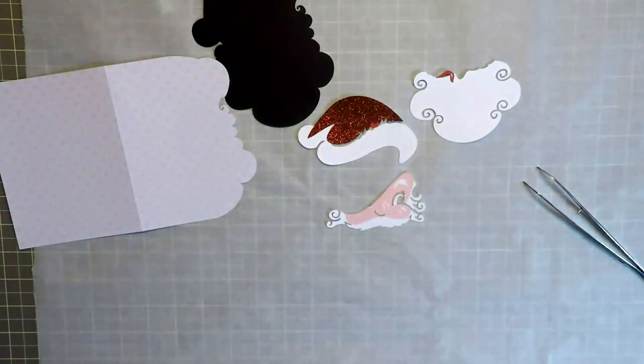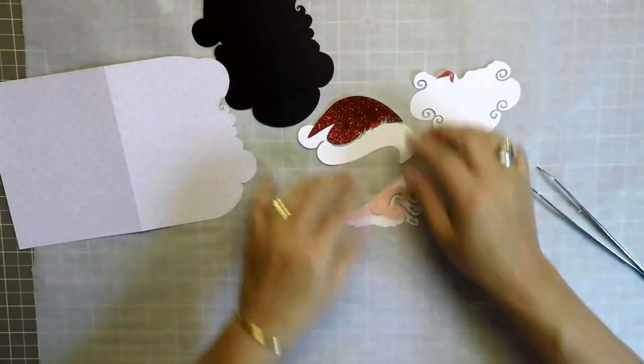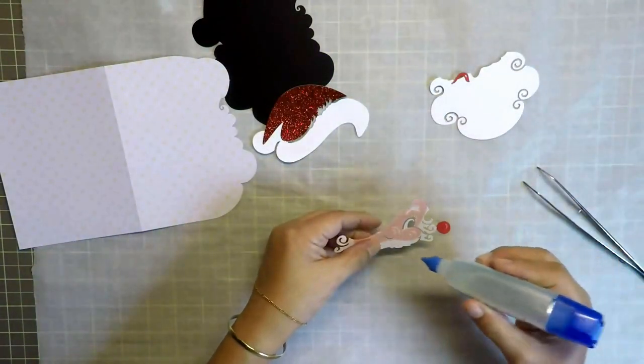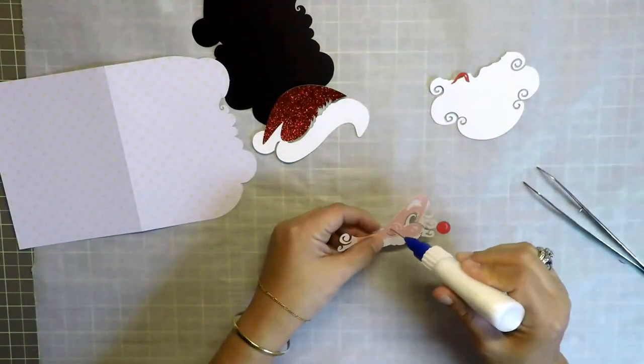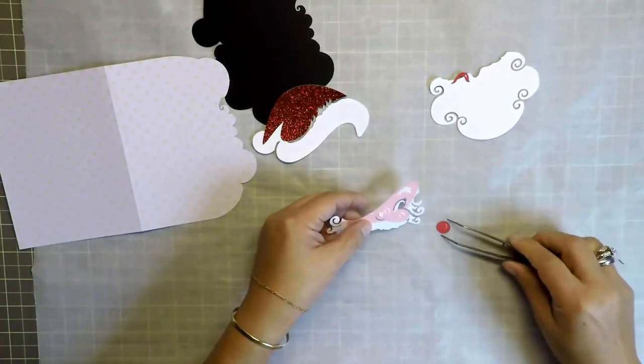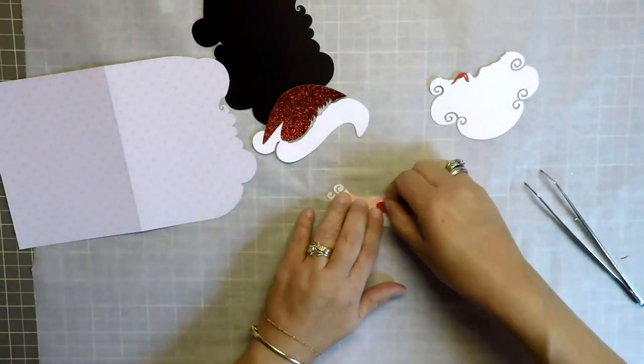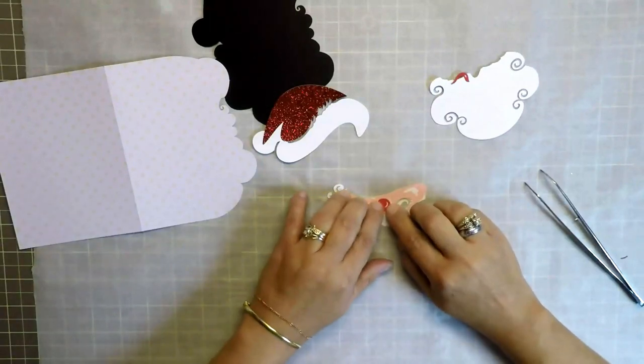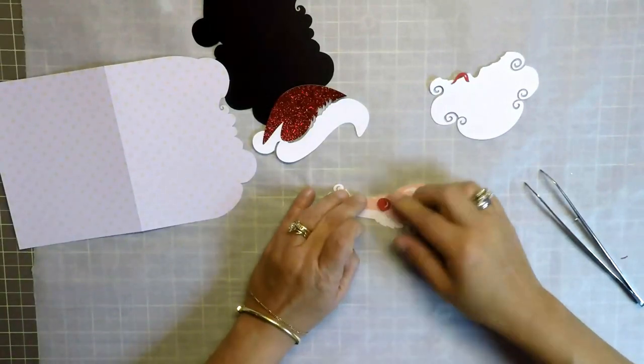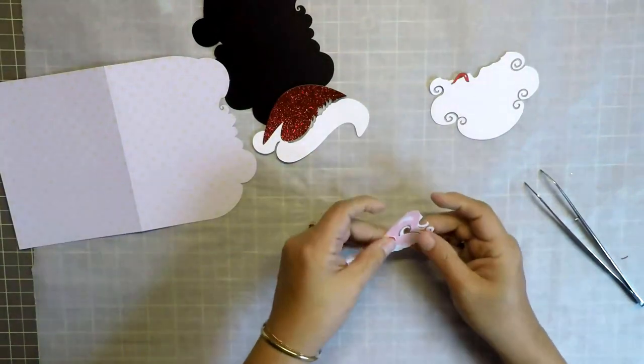So what I do is I take my Scotch Quick-Dry Adhesive Glue and transfer the glue into that bottle. Because the tops don't match on the two different bottles. With that said, let's go ahead and finish assembling the Santa Claus and adhering it to the face of the card.